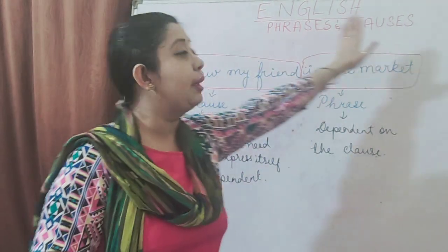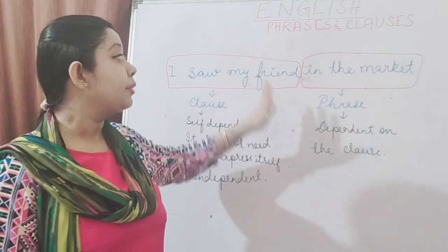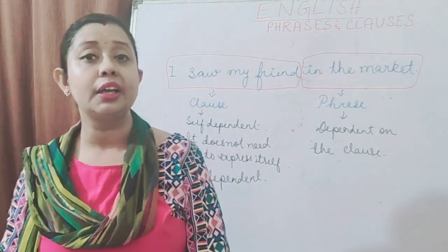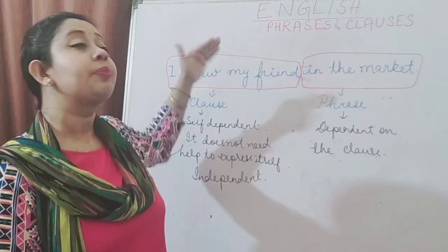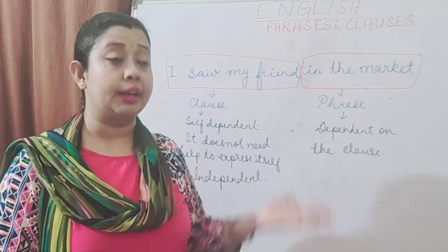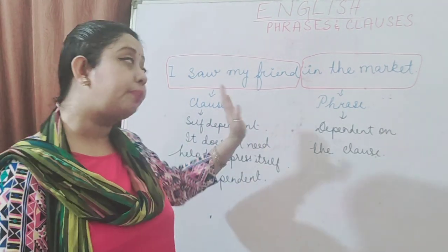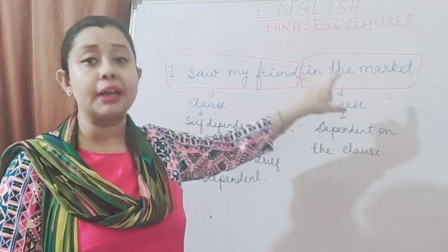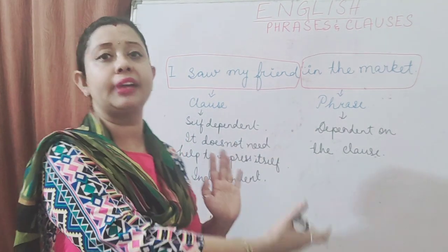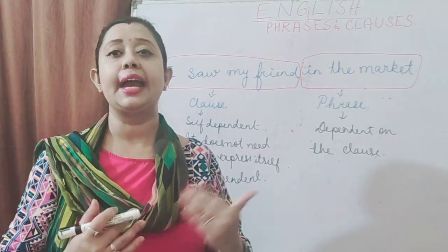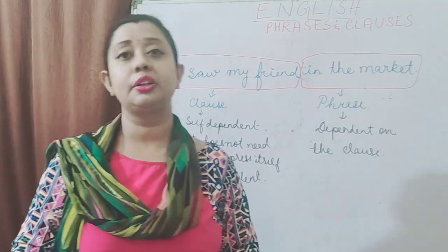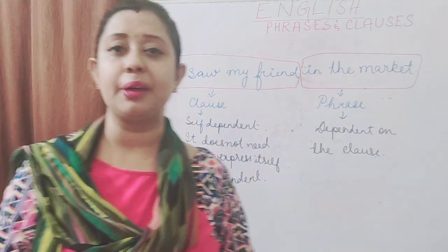Both together make up the whole sentence. To identify which is the phrase and which is the clause: the part of the sentence which you can understand when you remove the other part is the clause, and the part which you cannot understand without the other part is the phrase. This is where we will end today's class. In my next class, I will move further with clauses and their kinds. Thank you, my dear students.